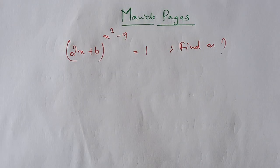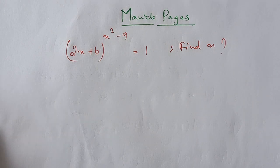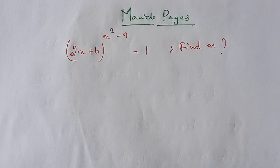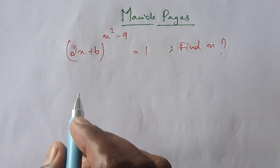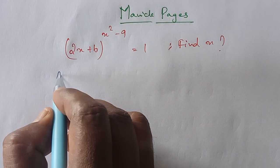Hello, welcome to Morning Pages. In today's page: 2x plus 6, raised to the power x squared minus 1, minus 9, which is equal to 1. Find the value of x.